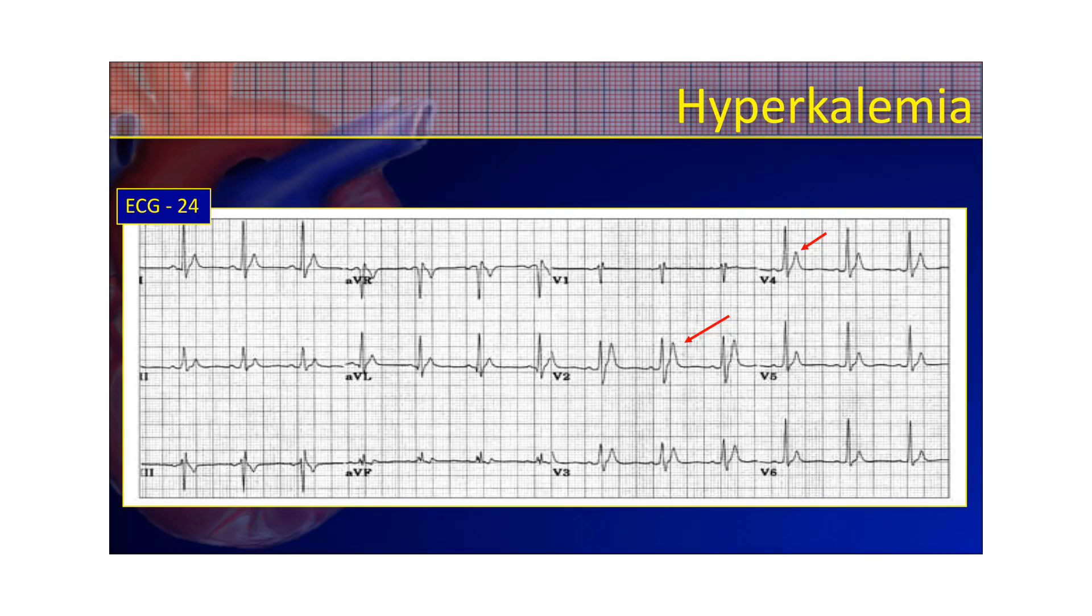Here's an example of a patient with hyperkalemia. This has been diagnosed. And you can see these very tall, skinny, sharp, peaked T-waves. And when I say sharp, just imagine touching the top of one of these T-waves, and you might actually prick your finger on them because they're so sharp, as Dr. Mattu says. So that's a good indication that they're not normal, and you may want to check the patient's potassium level.